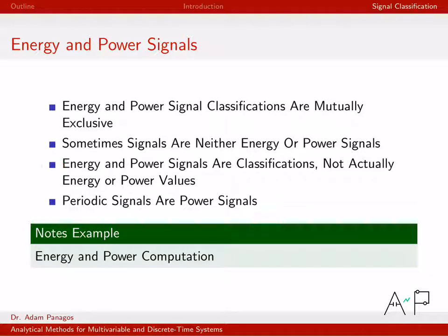One thing students get confused about: the words 'energy' and 'power' often make you think of units like joules and watts, but you have to be careful. Often in these classes, especially with discrete time signals, the signals are just lists of numbers with no units associated with them at all. After computing E, the answer might just be 57 — no units. Same thing with power: P might be 1500 with no units. Don't arbitrarily attach physical units to these values.